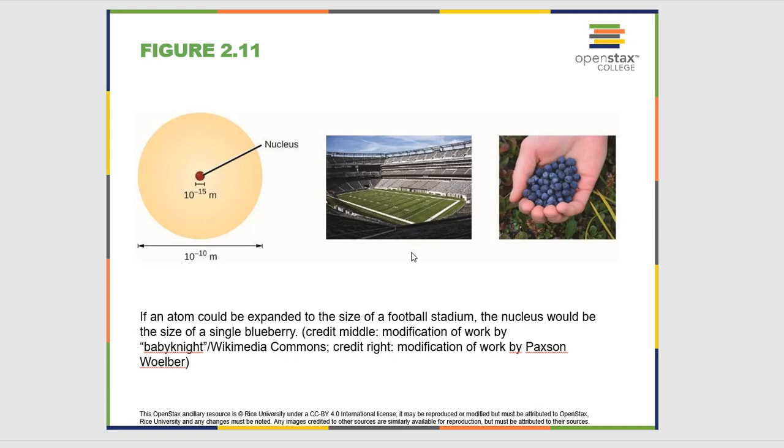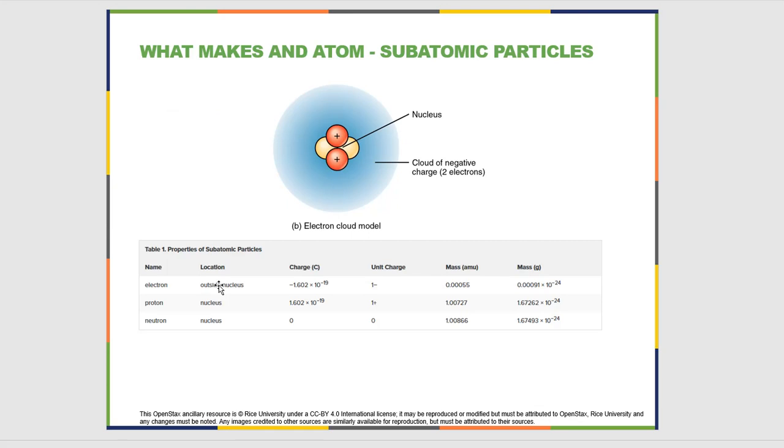So an atom is mostly empty space. If you look here, to give you an actual size of the atom, 10 times 10 to the minus 10 meters, which is an angstrom. So it's a very very small thing, which is why if you remember back to the previous section we talked about pennies, there are approximately six times 10 to the 22 atoms of copper in a single copper pre-1982 penny.